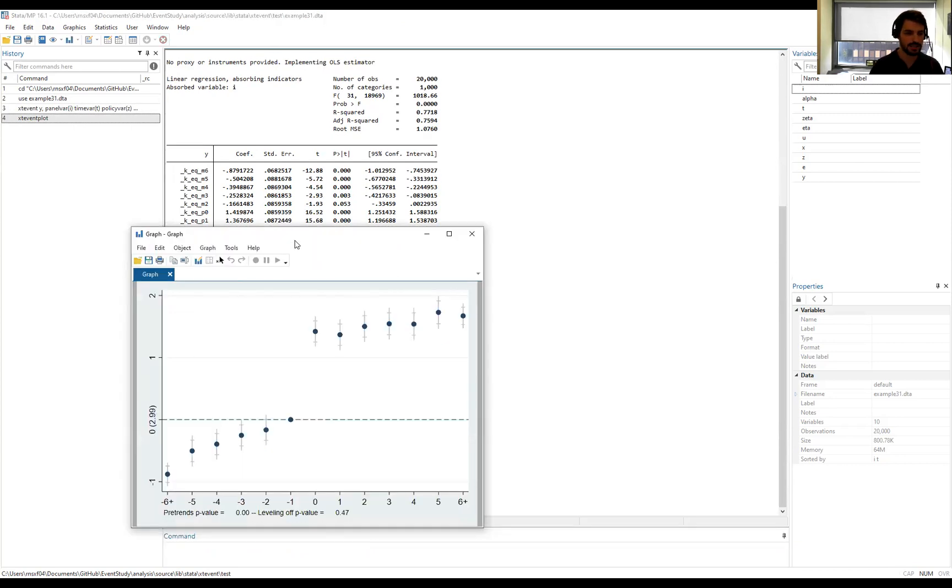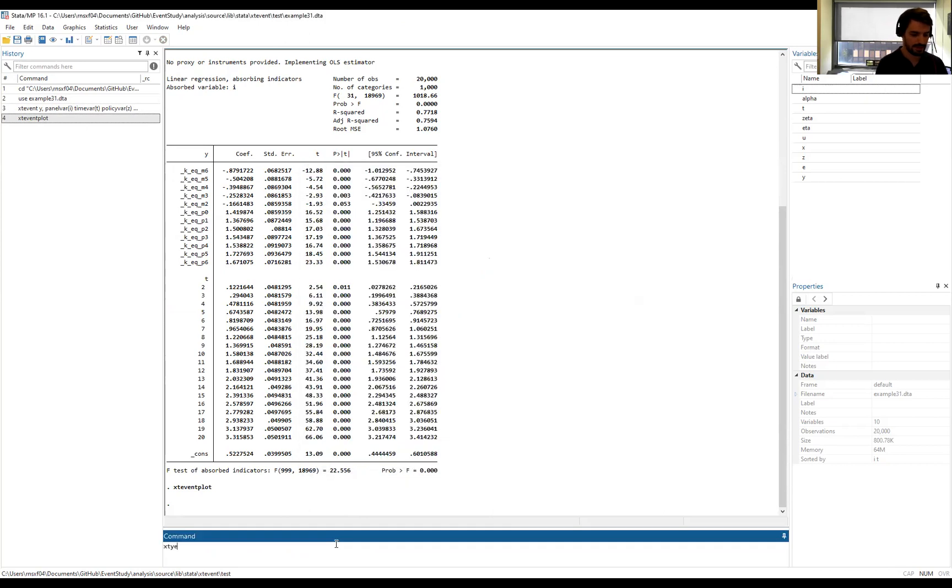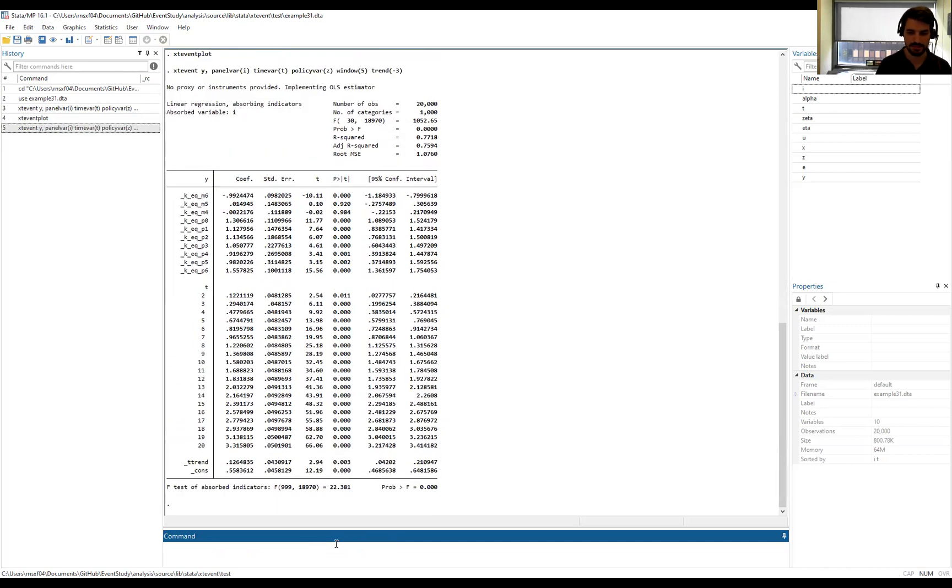If you think that the way to get causal estimates here is to estimate this model relative to a common event time trend, we can run the following. Again, xtevent, declare the outcome variable, panel variable, time variable, policy variable, and window length. Additionally, I'm going to add this trend command with the number minus three. This uses the three time periods prior to the event to learn the slope of the event time trend. If we estimate that, this is the estimation output.